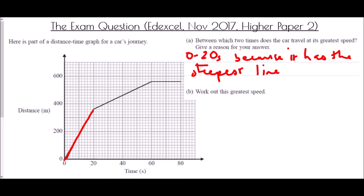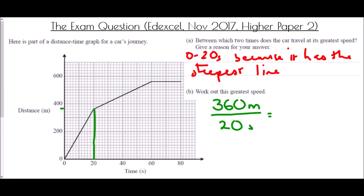Then it says work out this greatest speed. They're asking: what was the speed in that first section? We need the distance travelled. There are 10 squares between 200 and 400, so each little square is worth 20. That means we travelled 360 metres, and we did that in 20 seconds. 360 divided by 20 — cross out the zeros — 36 divided by 2 is 18. And very importantly, the units: 18 metres per second.